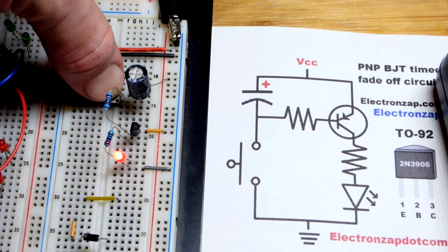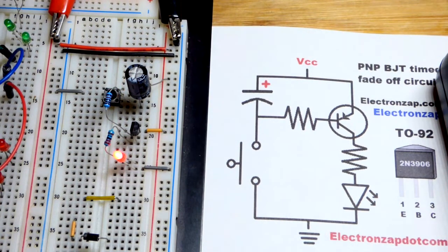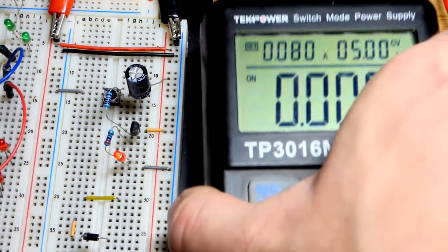I press the button, and I accidentally lost it, but I press the button. Right now, the LED is fully on, and the LED is fading off. It's a little hard to tell at first, but it is.